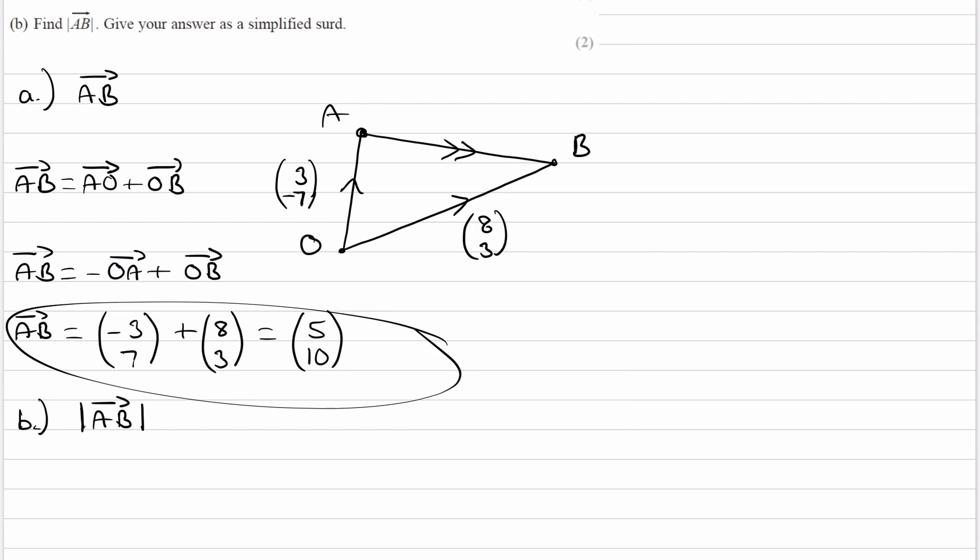So if I actually just draw out the vector AB. The vector AB is 5 in the i direction, so 5 towards the right. i direction is in the positive x direction. And then 10 in the positive y direction, which is the j direction. So using Pythagoras theorem, we can work out what this would be.